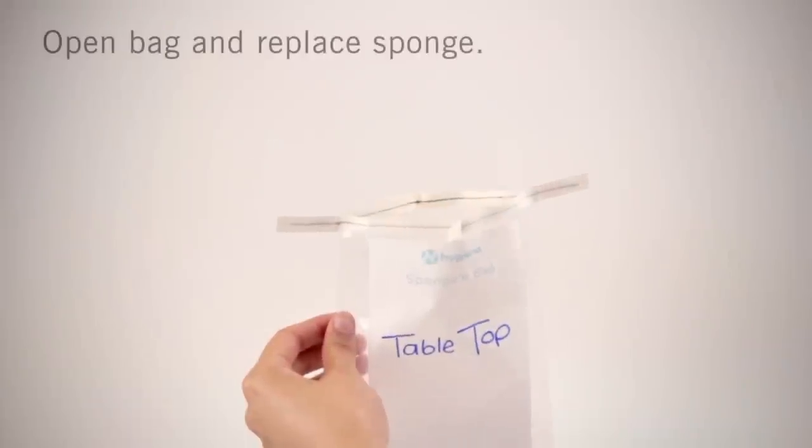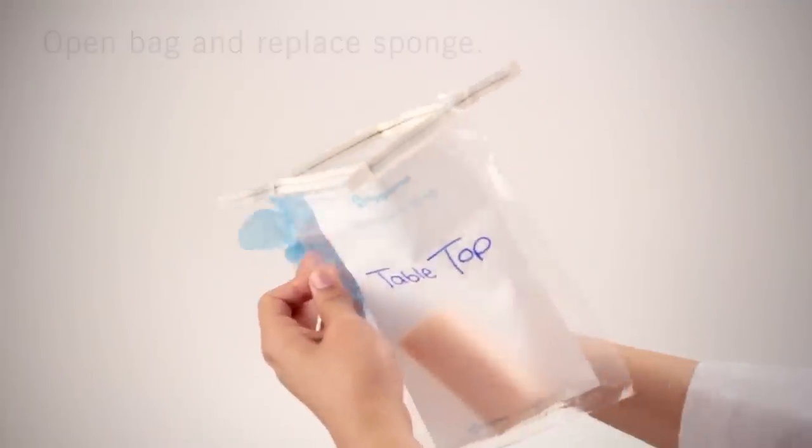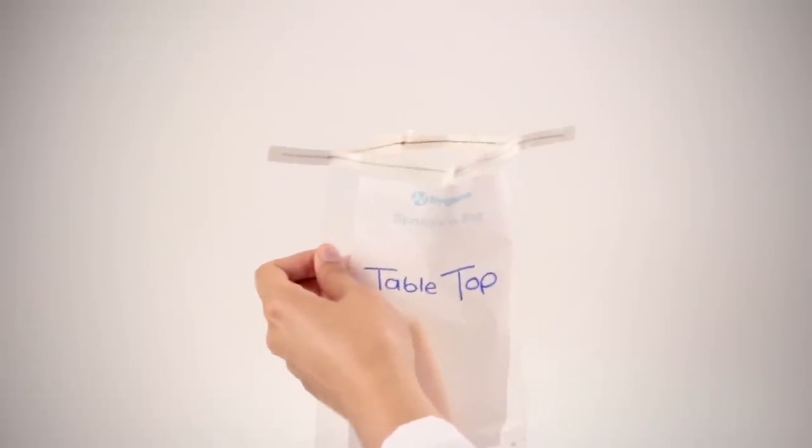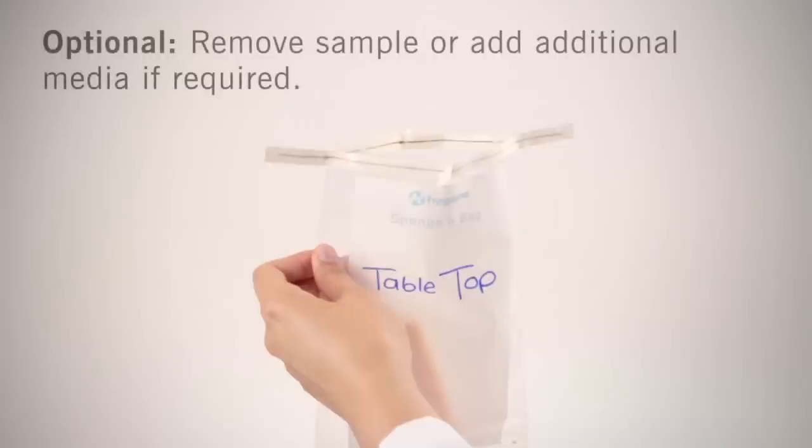Use the center tabs to open the bag and insert the sponge. Aseptically remove and discard your glove. You may now remove a sample or add additional media if required.